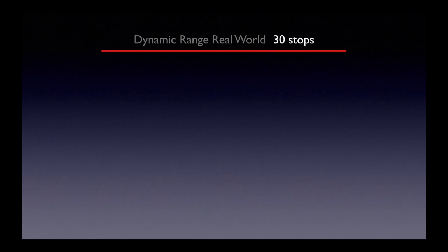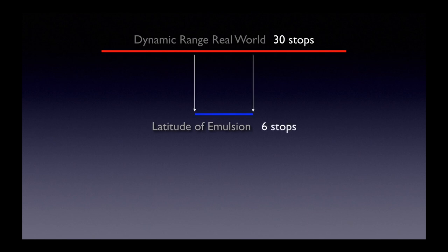Let's take an example where the real world has 30 stops of latitude, and we've got a camera that's only got six stops of latitude — say two stops of overexposure and four stops of underexposure. It loses detail in the highlights at plus two and loses detail in the shadows at minus four.